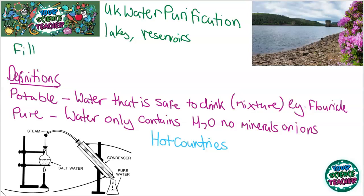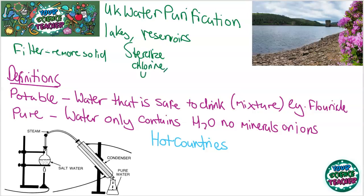The first thing we do is filter it, and that is to remove solid impurities. Then after we've filtered it, we will sterilize that water. To do that, we usually add a halogen such as chlorine and some UV light. And that will kill off harmful microorganisms and bacteria that you do not want in your water. After being sterilized, the water is then distributed to all parts of the country.